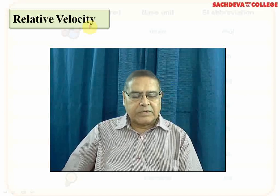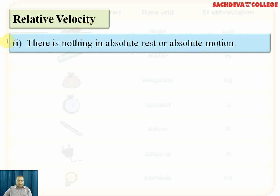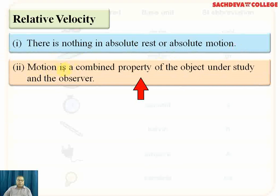There is nothing in absolute rest or absolute motion. For example, a book lying on a table is in the state of rest with respect to the inner walls of the room or the table, but the same book is in the state of motion with respect to outer space. Motion is a combined property of the object under study and the observer. Either both are in motion, or one is stationary and the other is moving, and we decide their relative velocity accordingly.